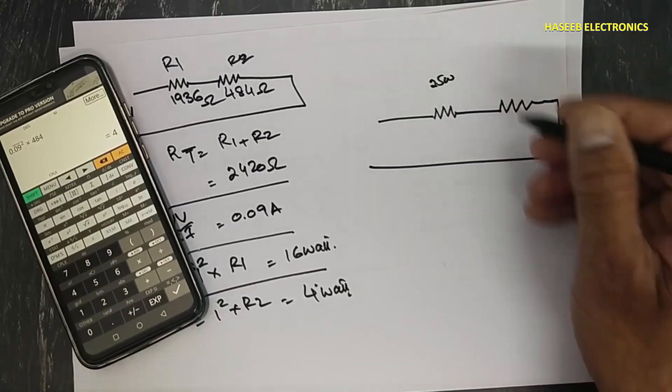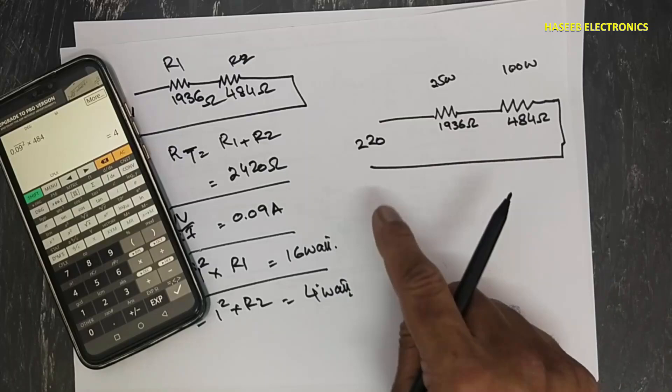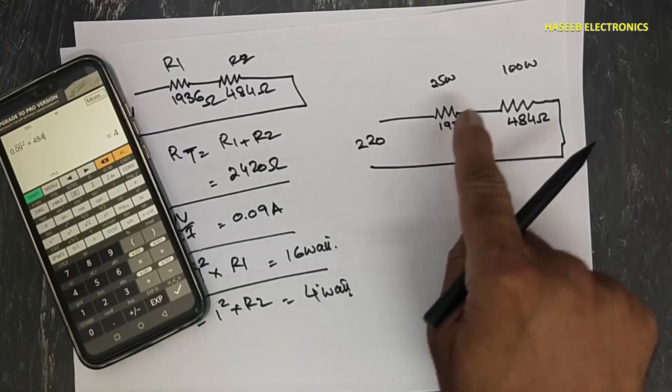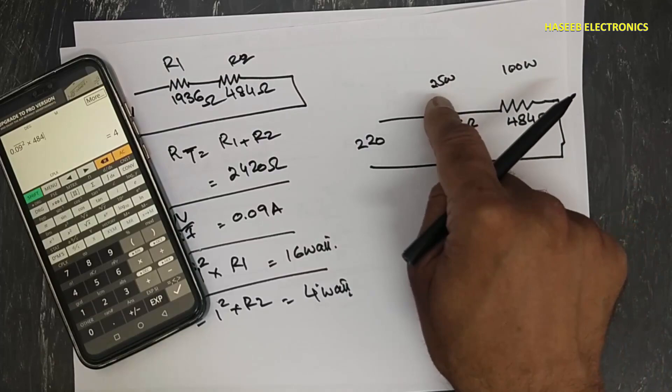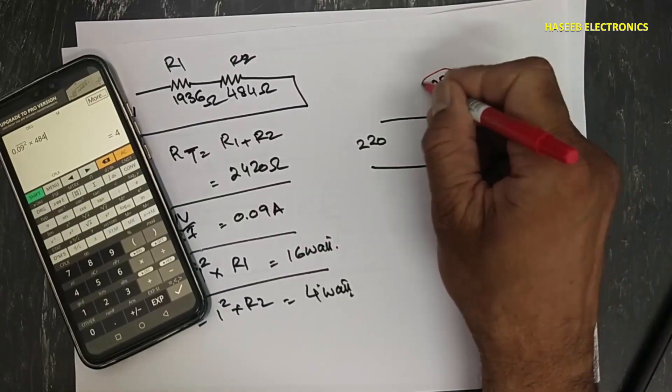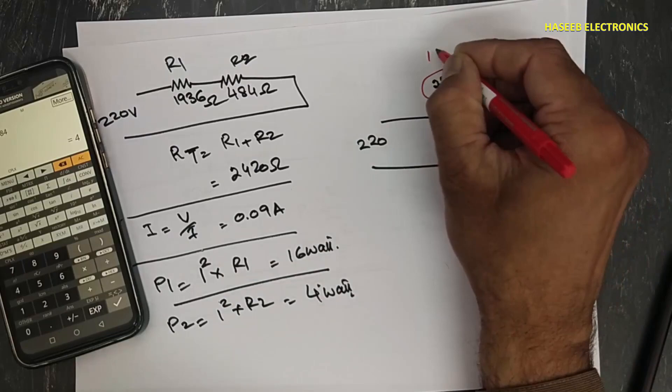The actual load is 25 watt, this one 100 watt. But now we connected two loads in series, 100 watt and 25 watt. Our new power rating for this one will consume 16 watt and P2 will consume 4 watt.